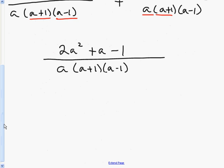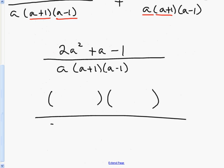After adding the numerators, the last thing you always do is ask yourself whether you can factor and reduce. In this case I can, because I can factor 2a² + a - 1. To get 2a² I need 2a and a; to get -1 I need 1 and 1 with opposite signs. Since I need -1 when multiplying and +1 when adding, I put (2a-1)(a+1). Checking: 2a times 1 is 2a, and -1 times a is -a; adding gives +a in the middle.